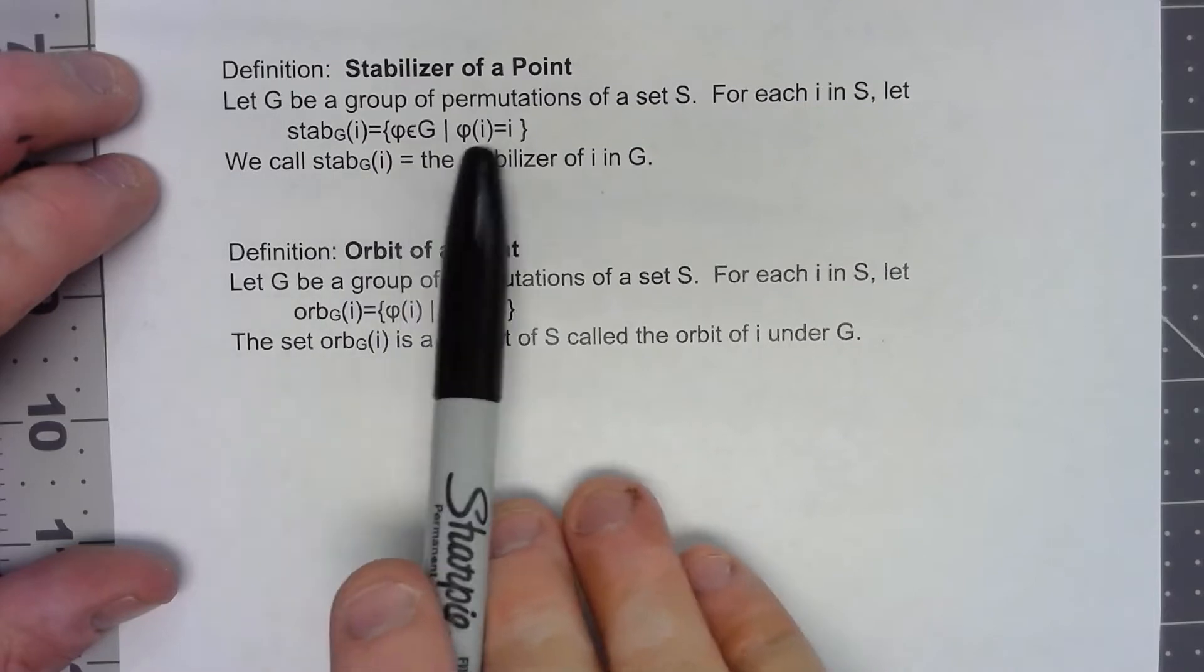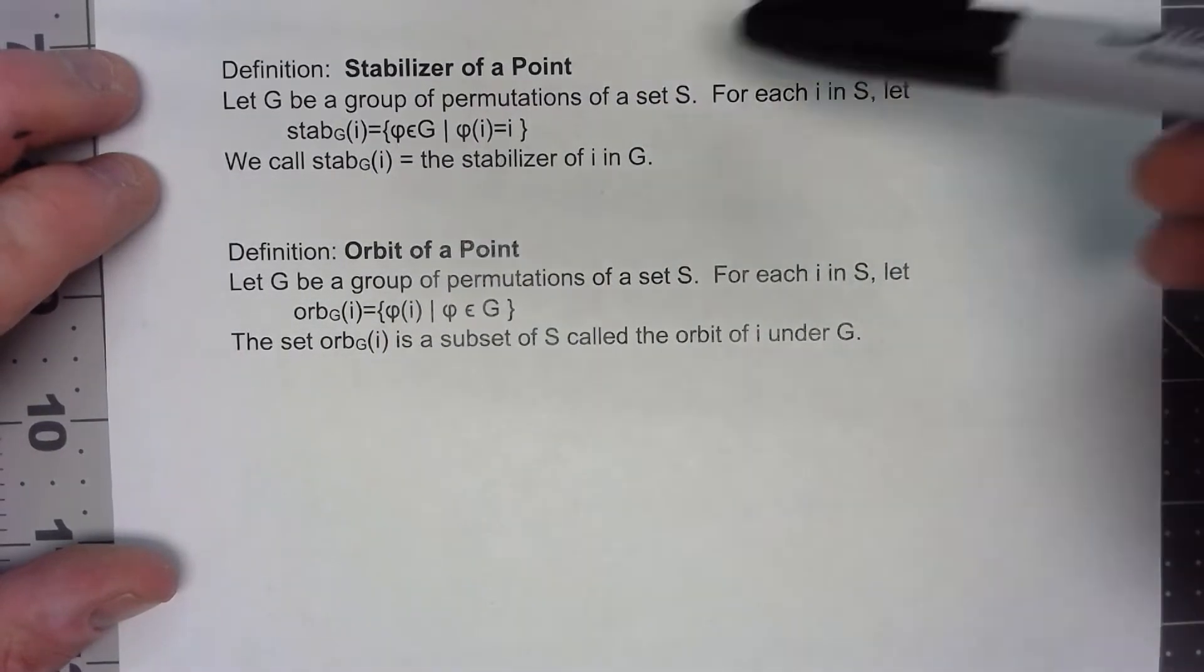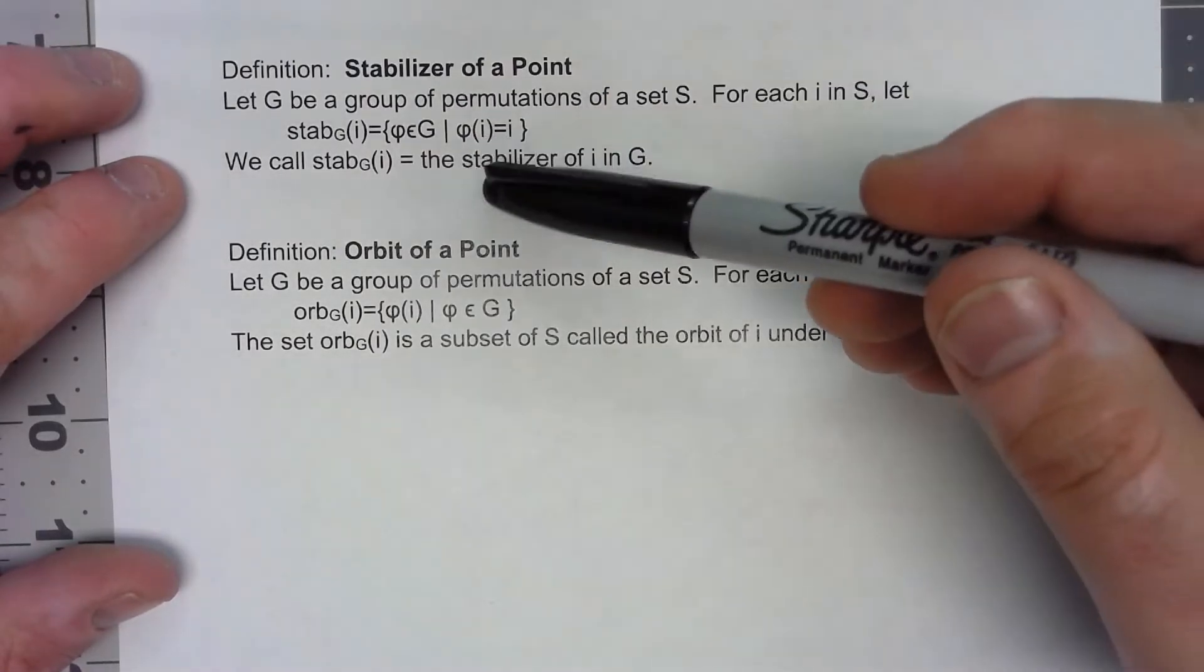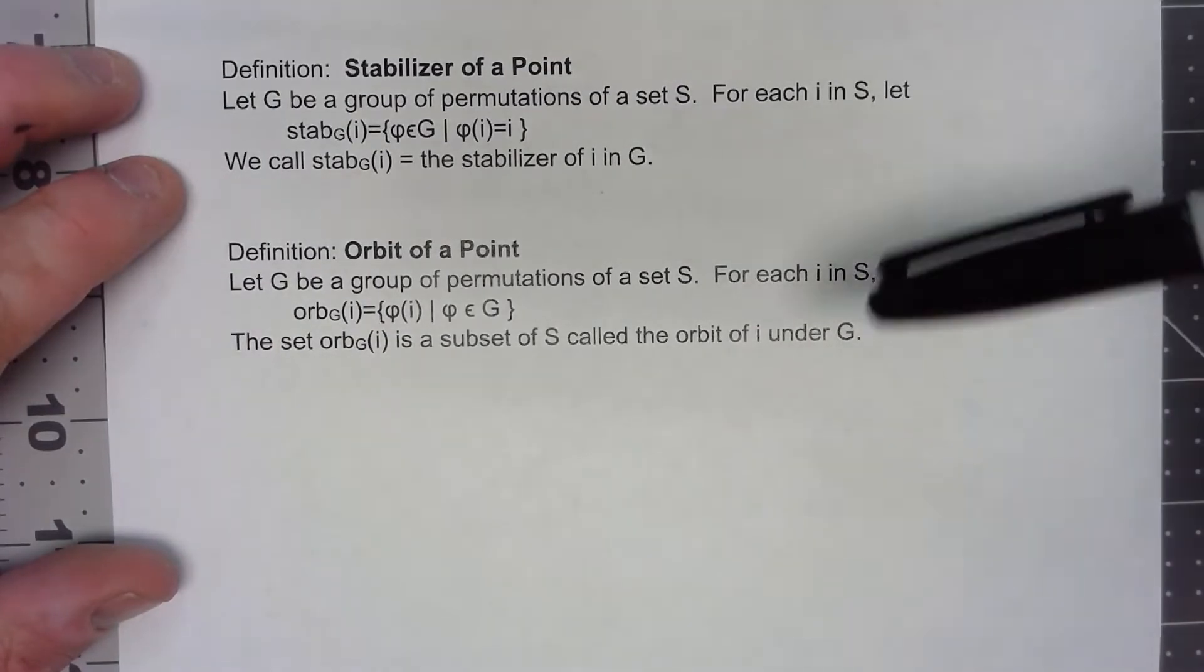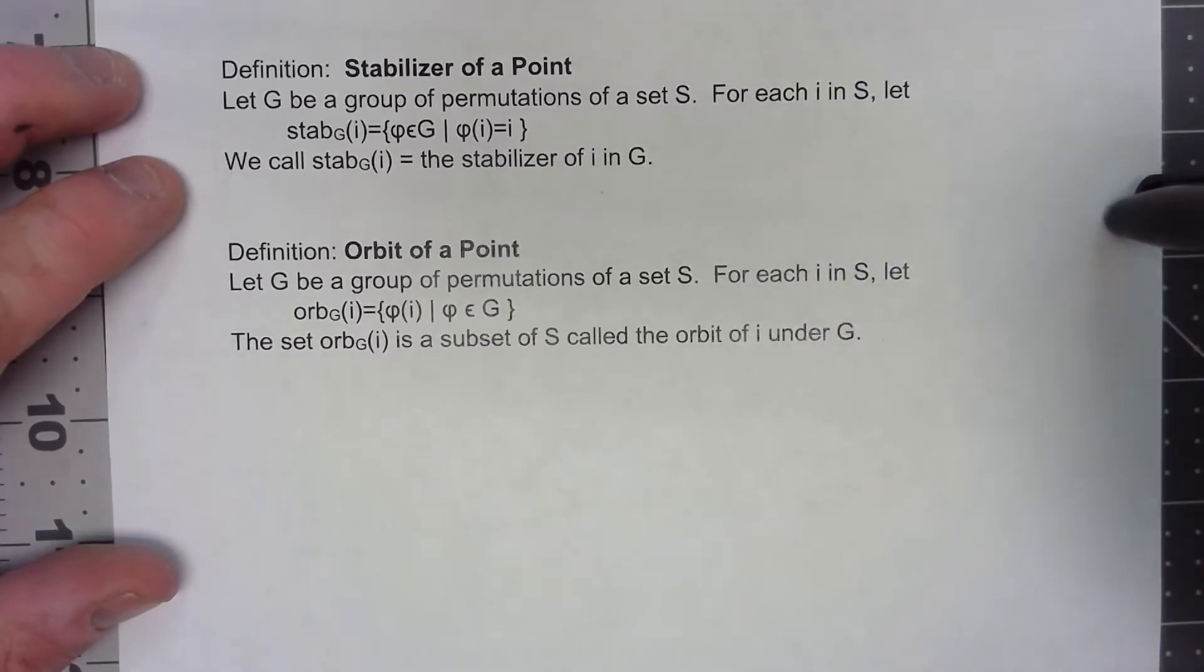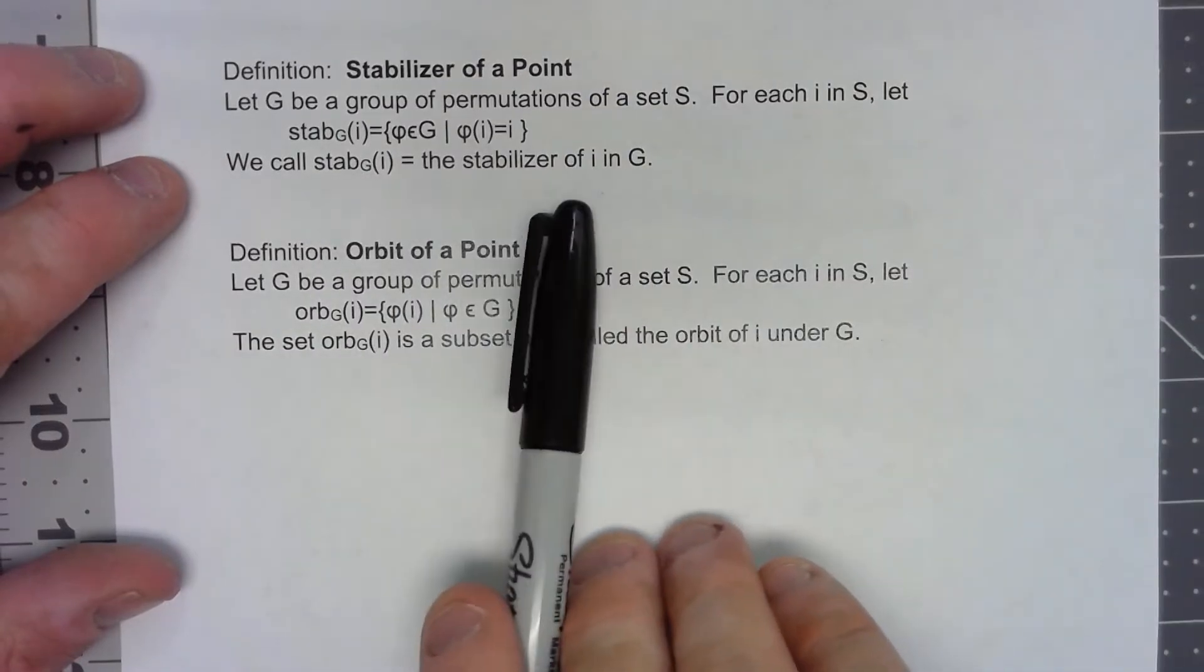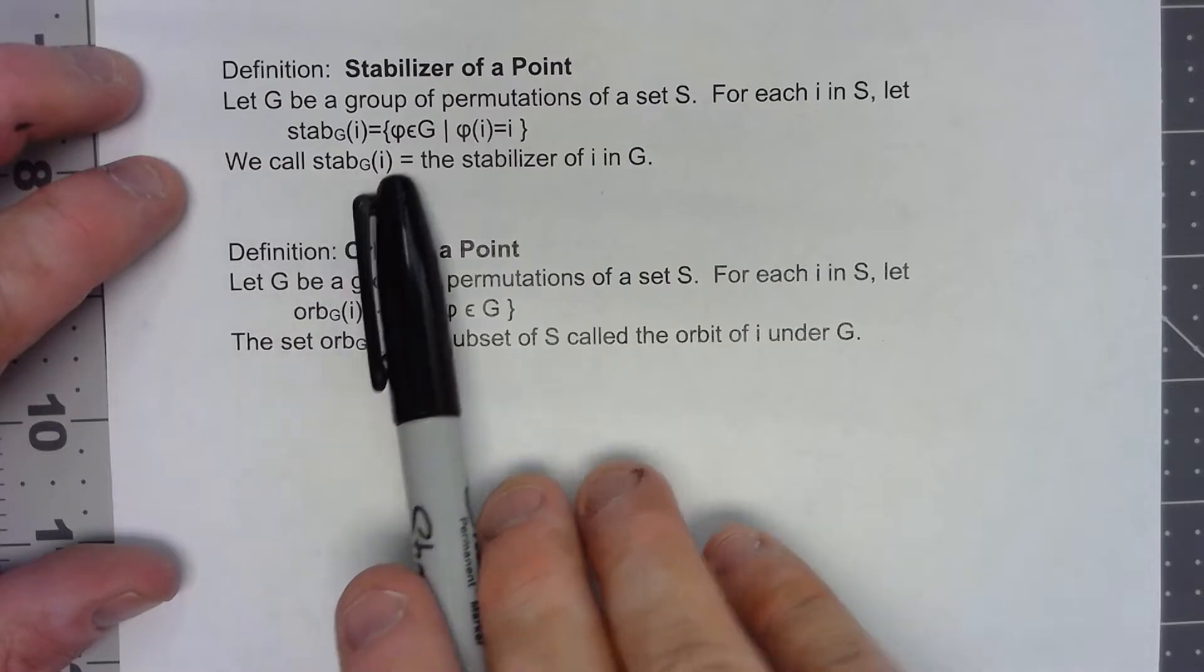So we start with a group of permutations, you take an element of S, and you look at which ones of those permutations don't affect that particular element of S. Don't affect it might be a little too strong, but in the end that permutation maps it to itself. We're going to call that the stabilizer of that element in G and use the notation stab_G of i.